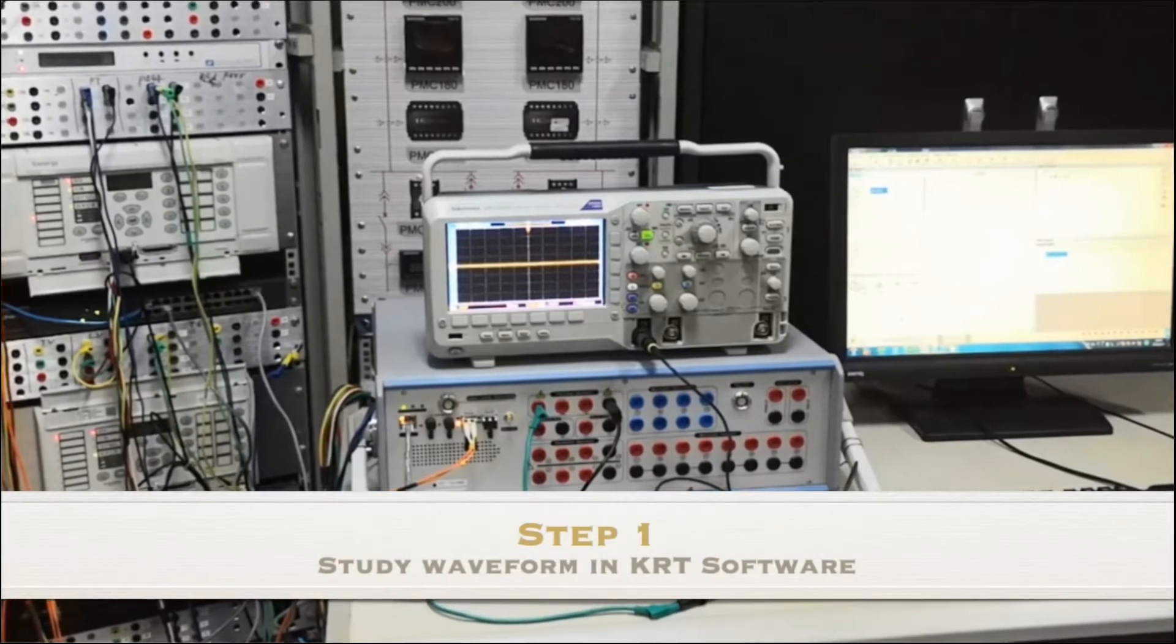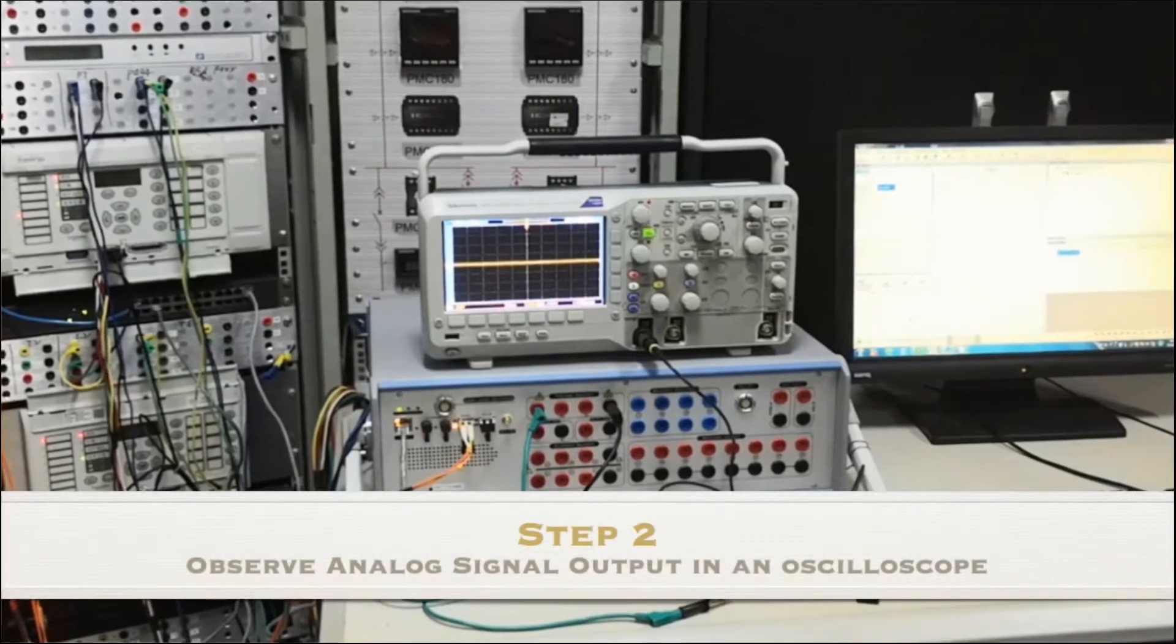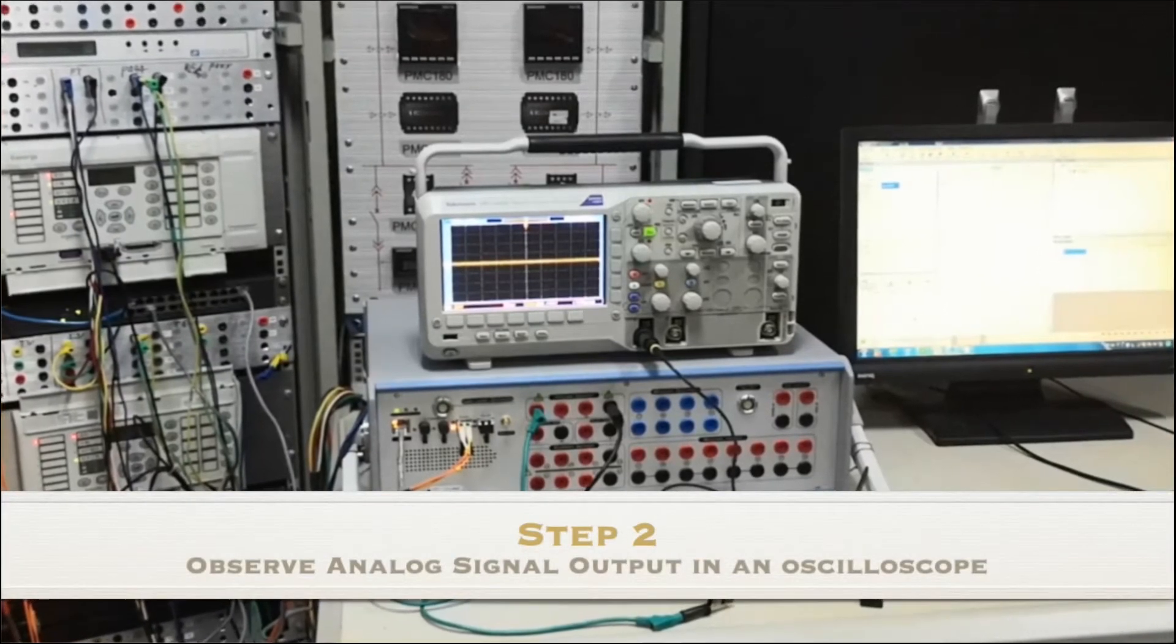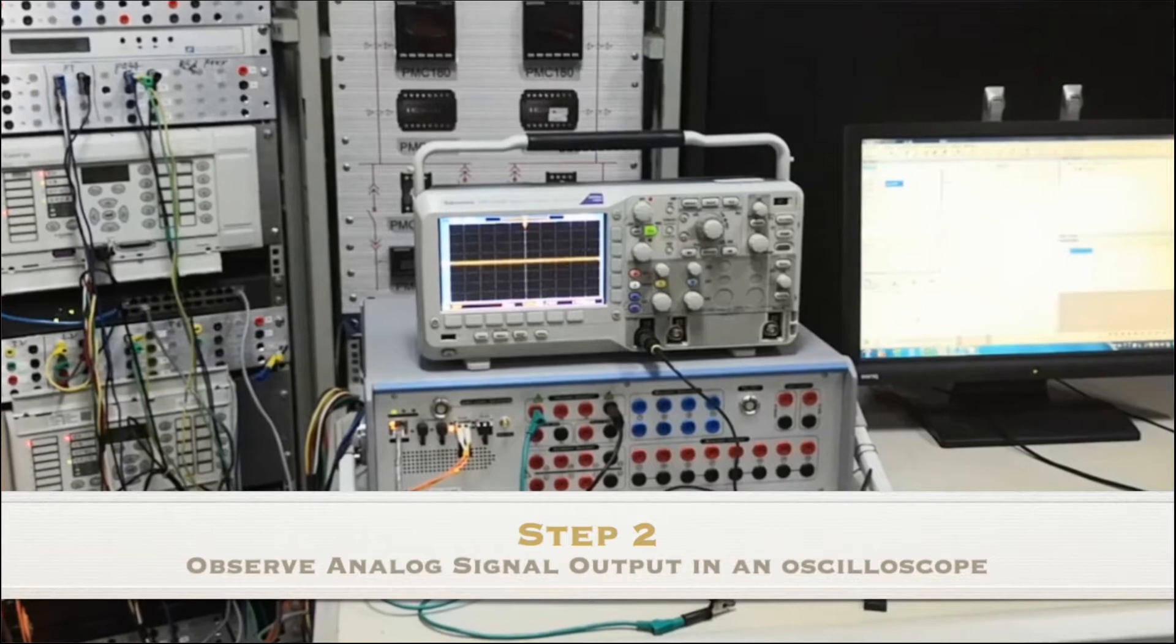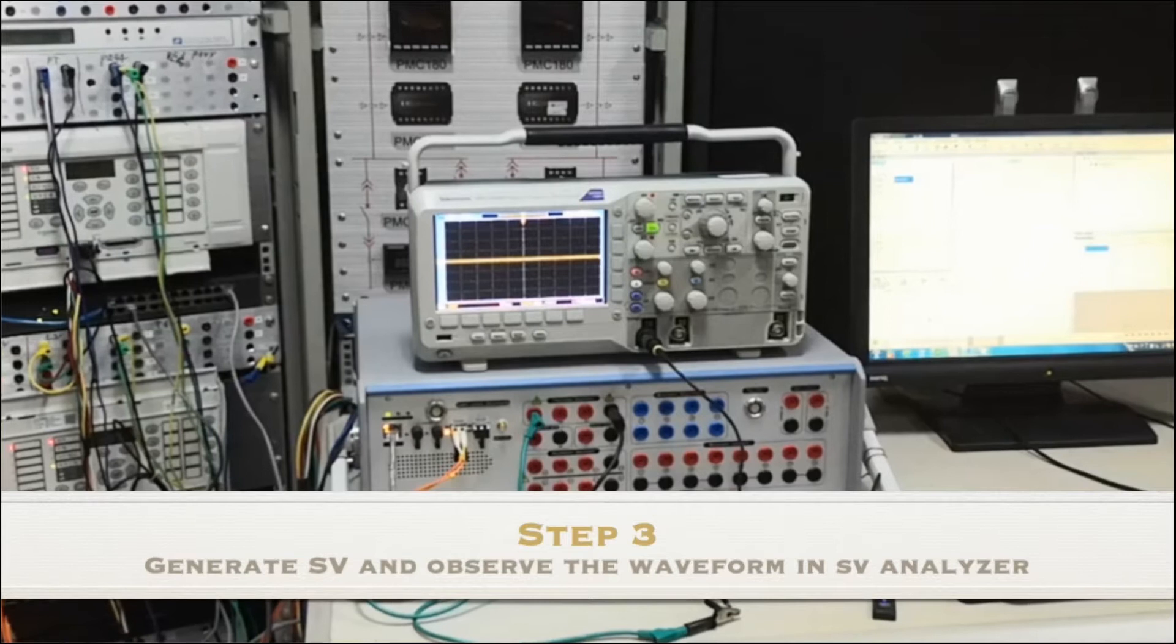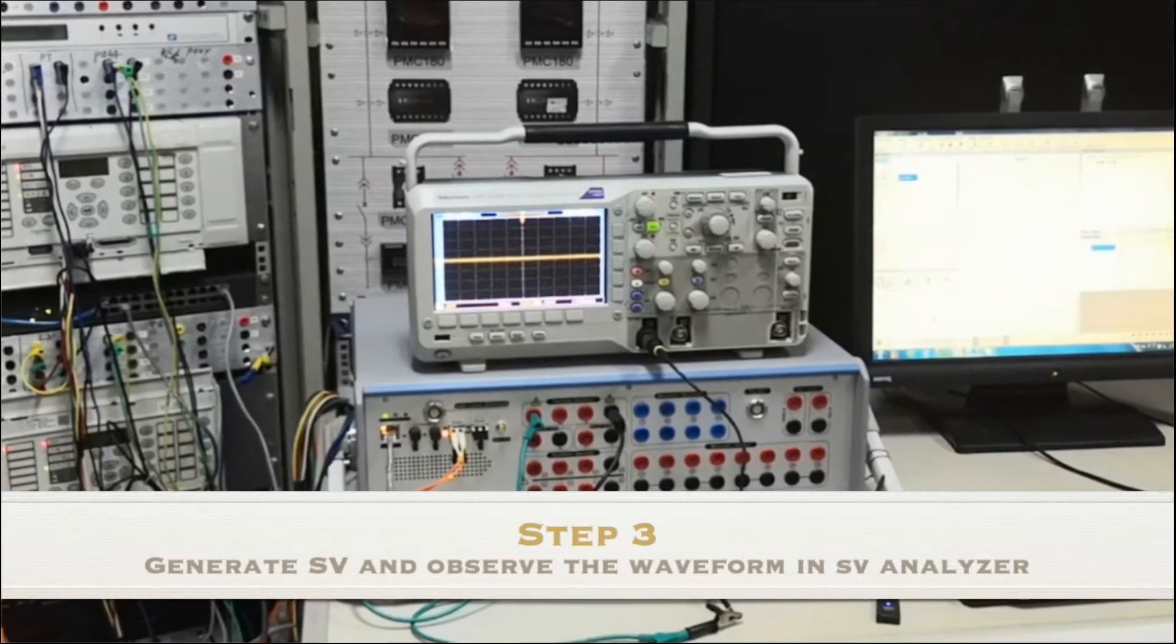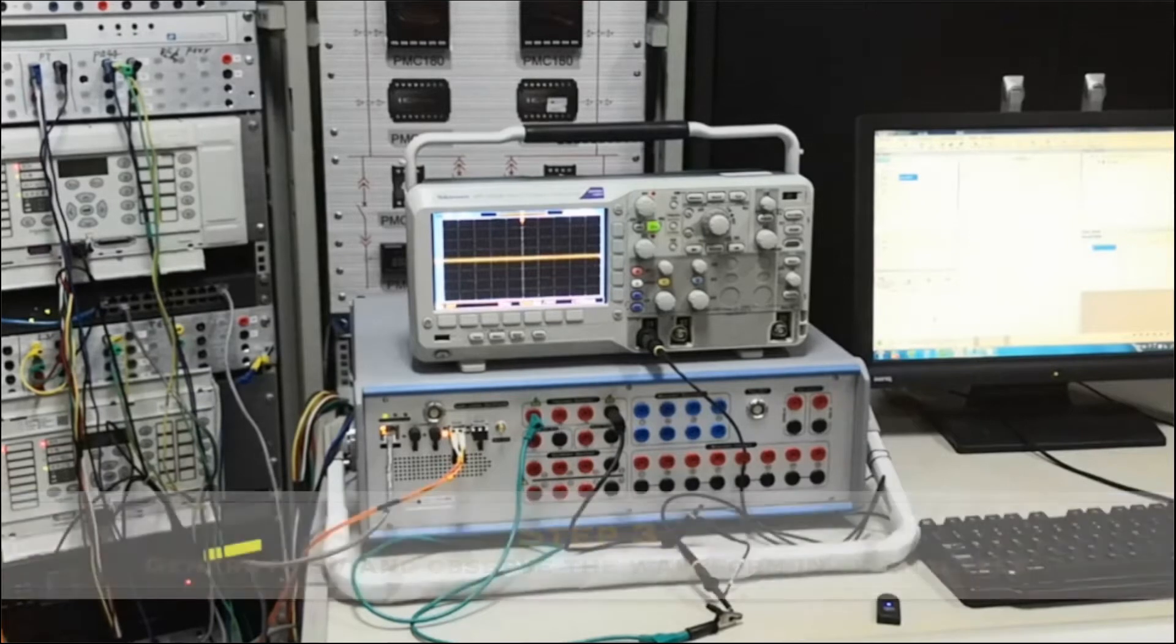First, we will do the simulation in the KRT software. Second, we will observe analog signal output in the oscilloscope. And third, we will generate the sampling value output for the same signal, and then observe them in the same sampling value analyzer.